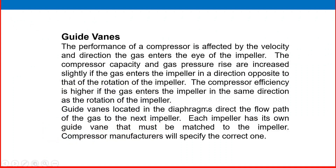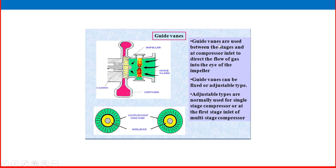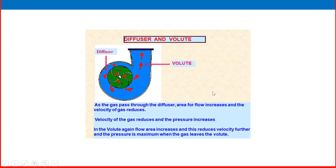The performance of a compressor is affected by the velocity and direction of gas entering the eye of the impeller. Compressor capacity and pressure rise increase slightly if the gas enters the impeller in a direction opposite to the impeller's rotation. Compressor efficiency is higher if the gas enters in the same direction as the impeller's rotation. Guide vanes (or gate vanes) are located in the diaphragm to direct the flow path of gas to the next impeller. Each impeller has its own guide vane that must be matched to it. Guide vanes can be fixed or adjustable; adjustable types are normally used for single-stage compressors or at the first-stage inlet of multi-stage compressors.